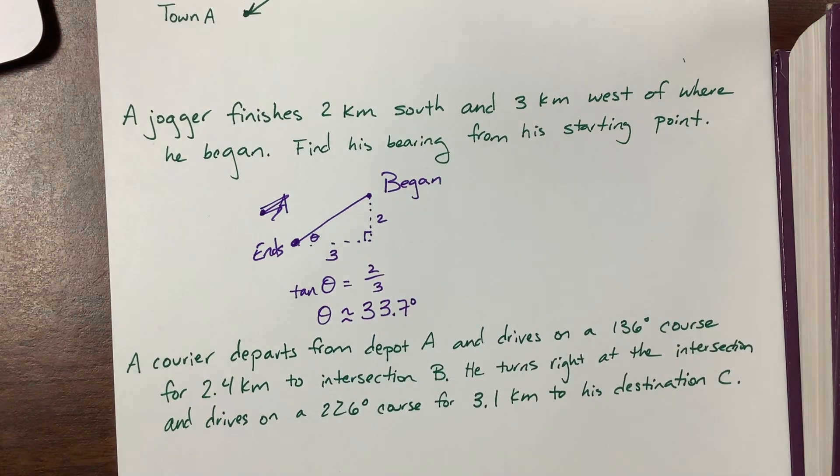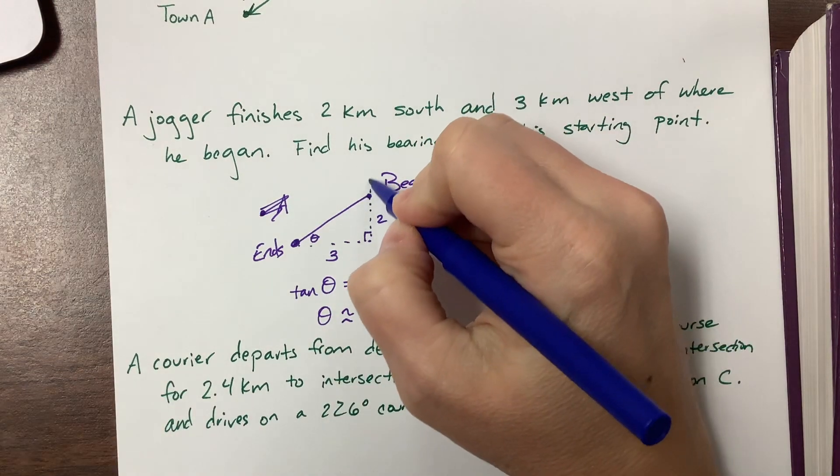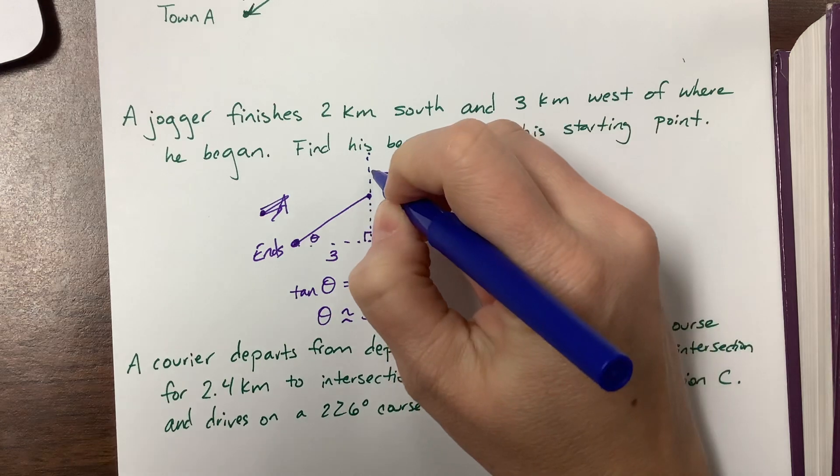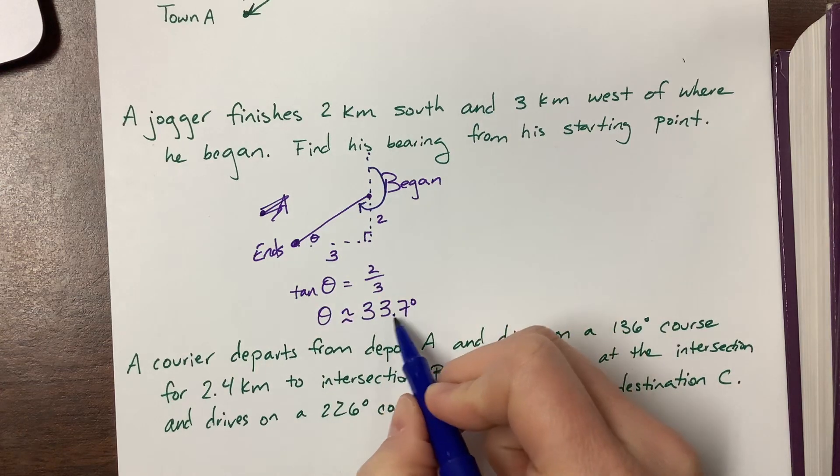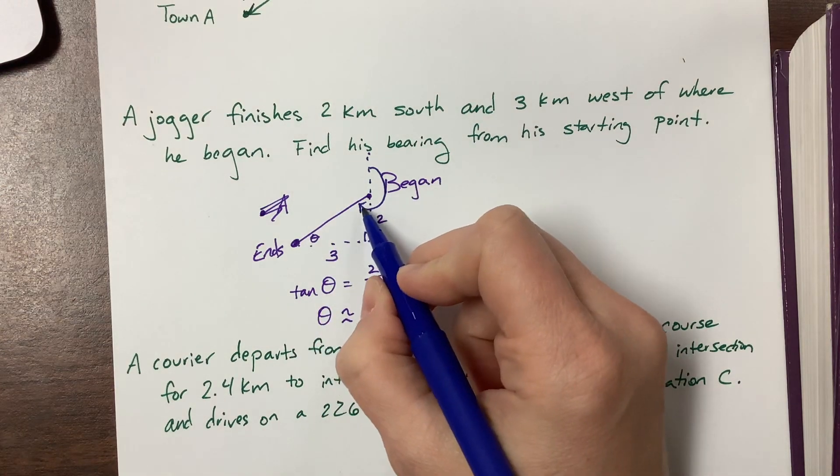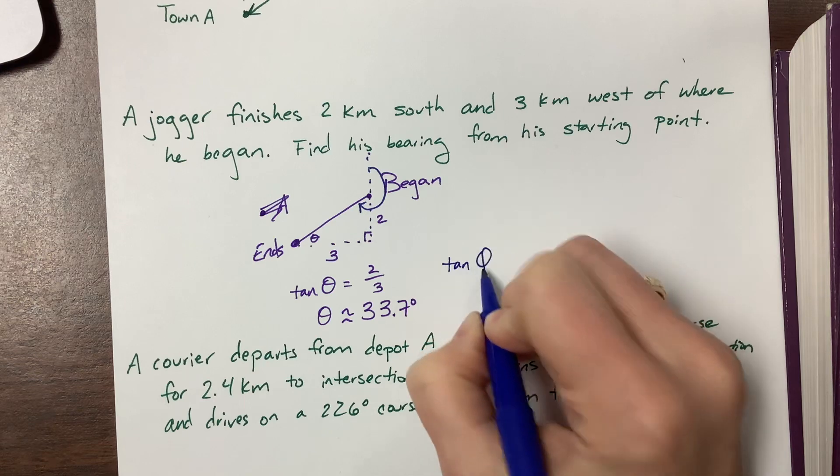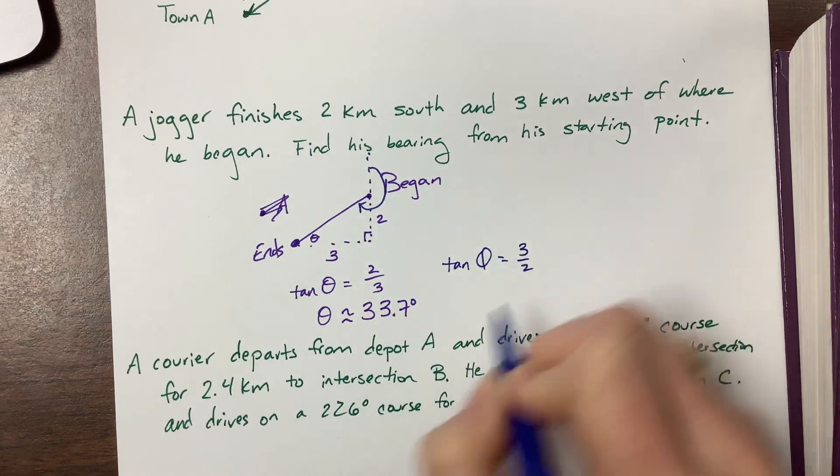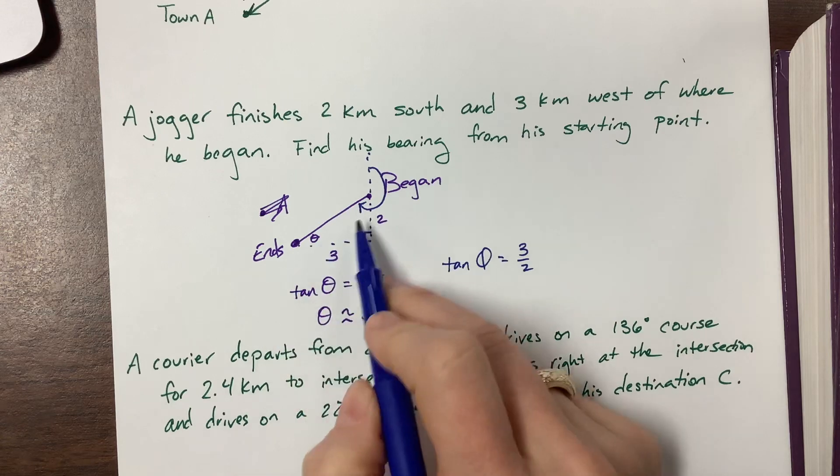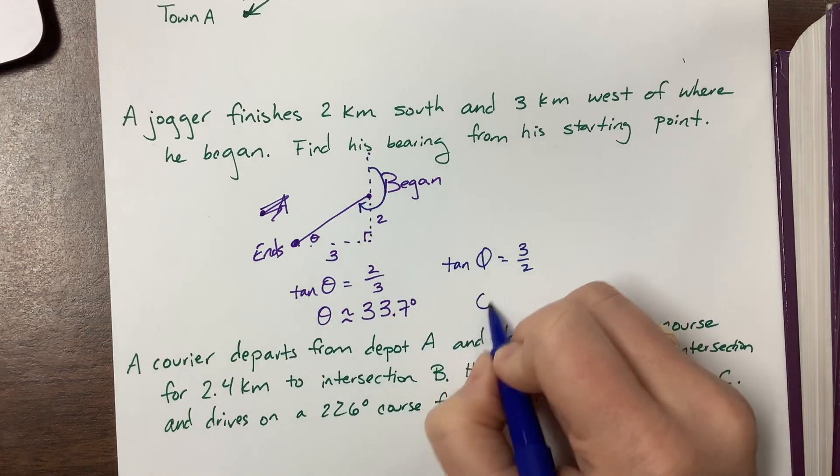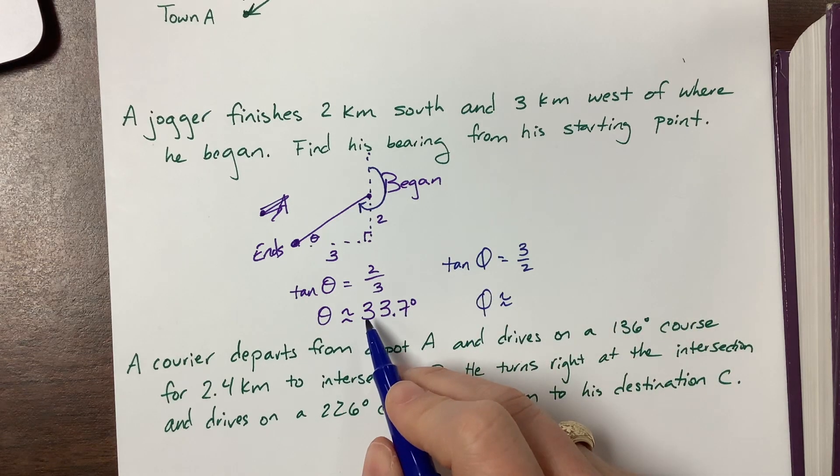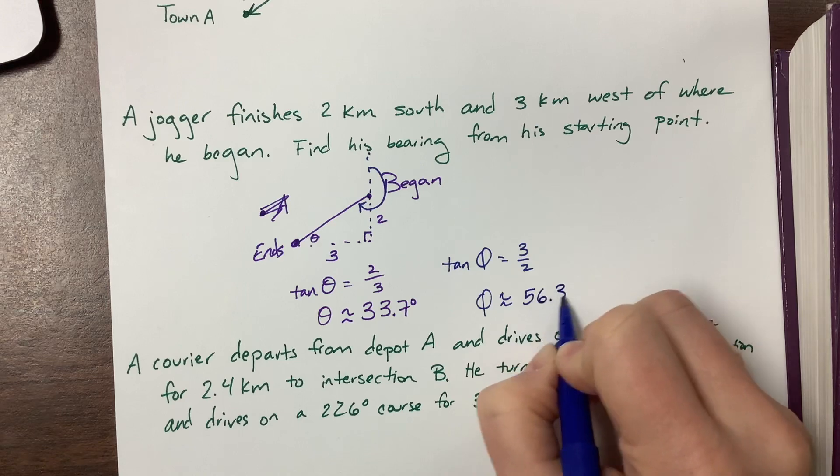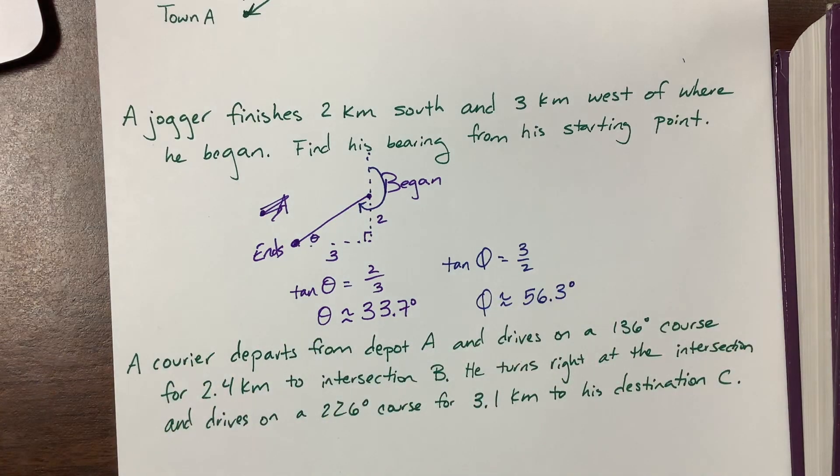But that's not the angle that we wanted. We want to know from where he began to where he ended, what is that angle. Well if this one right here is 33.7, I could have found the other one. Maybe I should have said the tangent of phi is equal to 3 over 2, and that's going to be the complement to that angle. It's going to add up to 90.